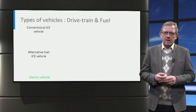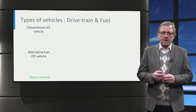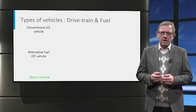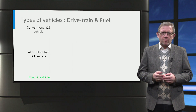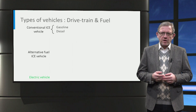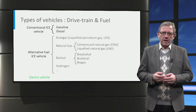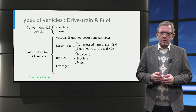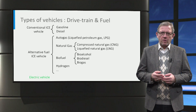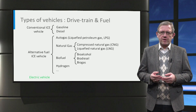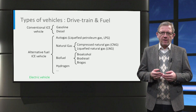Vehicles can be classified based on drivetrain and fuel type, such as conventional internal combustion engine vehicle, the alternative fuel internal combustion engine vehicle and the electric vehicle. The internal combustion engine is commonly referred by its short name ICE. The conventional internal combustion engine vehicle includes the gasoline and diesel vehicles. The alternative fuel internal combustion engine vehicle refers to vehicles that run on a fuel other than gasoline or diesel, like autogas, natural gas, biofuel or hydrogen. In all forms of internal combustion engine vehicles, the drivetrain is mechanical.